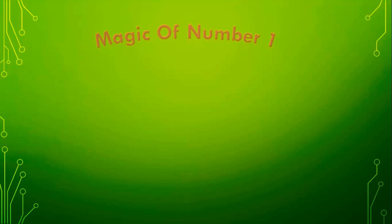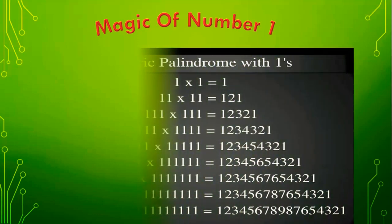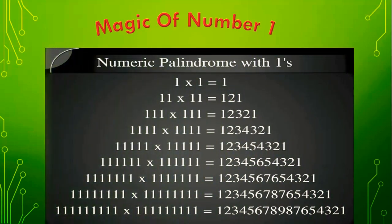Now, let us see the first natural number, 1. We will see some palindrome numbers formed by the number 1. What is a palindrome number? It is a number that reads the same from both sides. Those numbers are called palindrome numbers. These numbers are formed with the help of 1. Look at how they are formed.